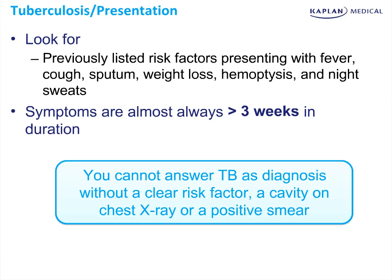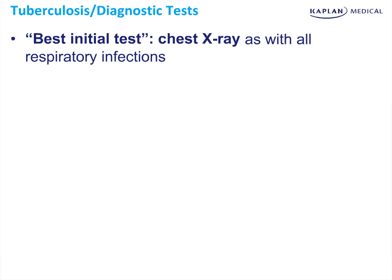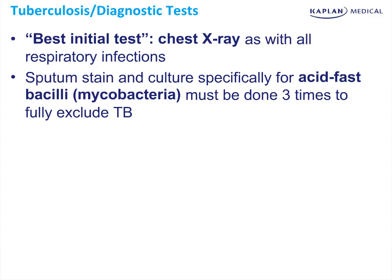Remember, on Step 2, you cannot answer TB as the diagnosis without a clear risk factor. You must also have a cavity on chest x-ray or a positive smear for mycobacterium. The best initial test for tuberculosis will be a chest x-ray, as is the case with all respiratory infections. The sputum stain and culture must be specific for acid-fast bacteria, and this must be done three separate times and must be negative three separate times to fully exclude TB.